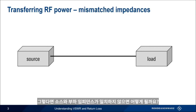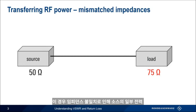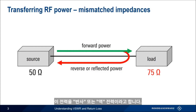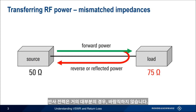So what happens if there's a mismatch or difference between the source and load impedances? In this case, the impedance mismatch causes some of the power from the source, or the forward power, to be reflected from the load back towards the source. This power is called the reflected, or reverse power — we'll use the terms interchangeably in this presentation. Reflected power is almost always undesirable; there are very few cases where we would want any power reflected from the load back towards the source.